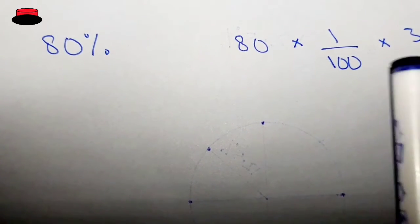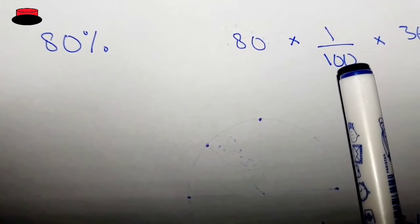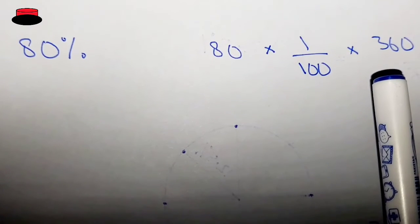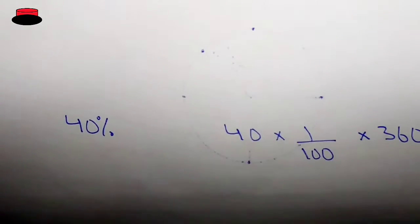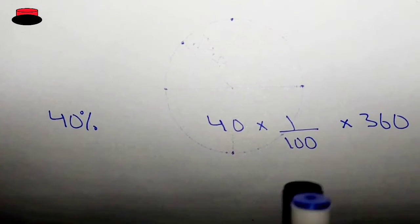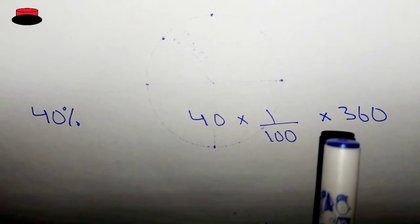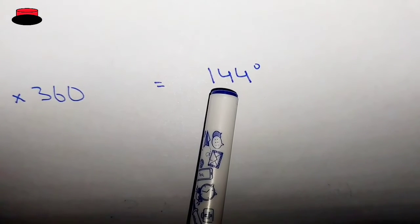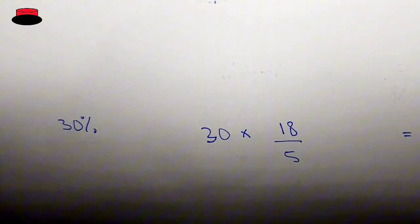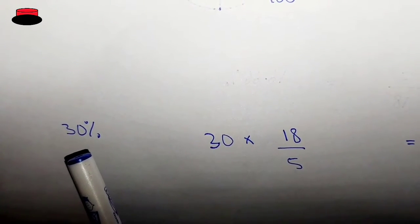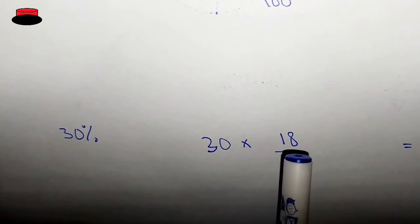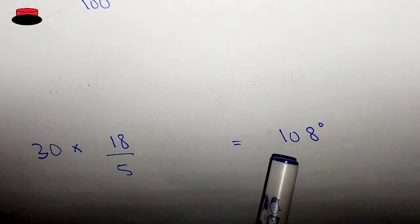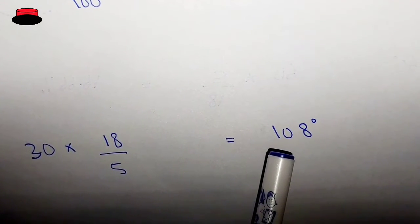So 80 into 1 over 100 into 360. The answer will be 288 degrees. And convert 40 percent into degree: 40 into 1 over 100 into 360. The answer will be 144 degrees. And in the same way, 30 percent: 30 into 360 over 100, or 18 over 5. The answer will be 108 degrees.